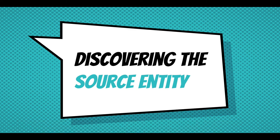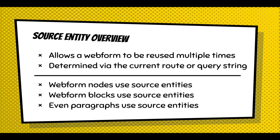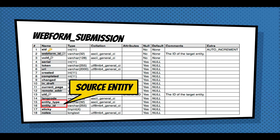A key entity concept in the webform module is the source entity. A source entity tracks and creates a relationship to the Drupal entity from which a webform was submitted. Source entities allow a webform to be reused multiple times — you can take one webform and attach it to multiple source entities like nodes and then track submissions. The source entity can be determined via the current route, node route, or query string. Webform nodes, blocks, and even paragraphs use source entities. In the submission table there are two columns — entity type and ID — which represent the source entity.